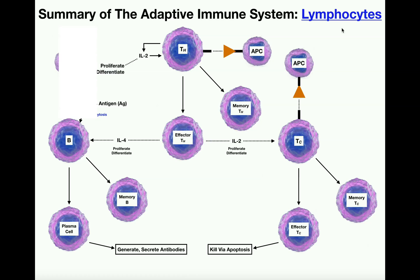There's a lot of confusion with the adaptive immune system and there are a lot of differences between these cells and the cells of the innate immune system. Before we get into this summary, I want to preface some differences between the cells of the adaptive immune system and the cells of the innate immune system.